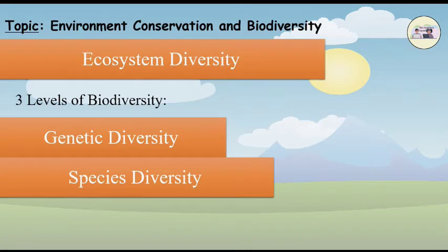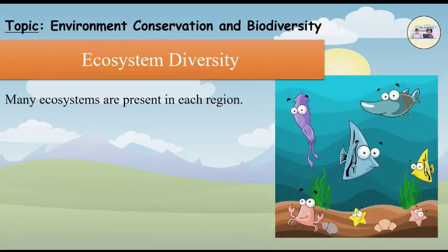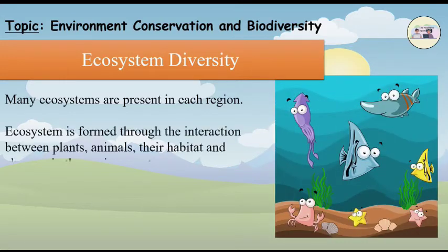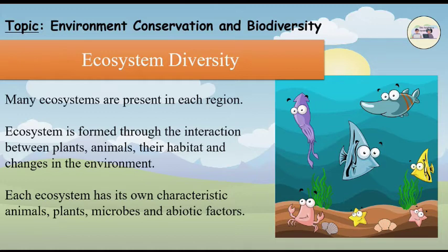Ecosystem Diversity: Many ecosystems are present in a region. An ecosystem is formed through the interaction between plants, animals, their habitat, and changes in the environment. Each ecosystem has its own characteristics, animals, plants, microbes, and abiotic factors.